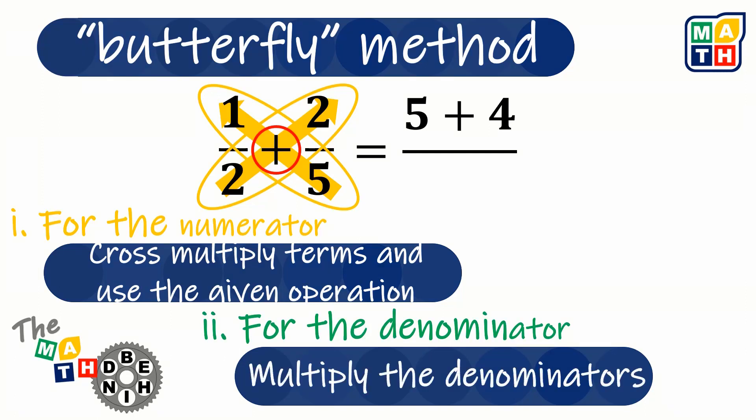The butterfly method allows us to multiply the denominators. So 2 times 5 equals 10. Then, if we are to simplify further, the result will be 9 tenths.